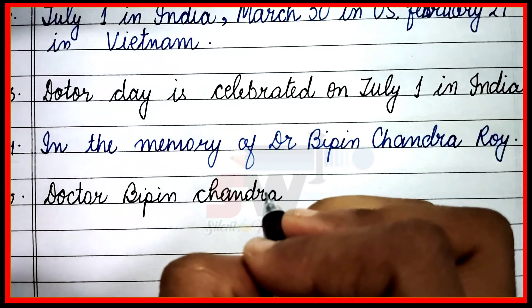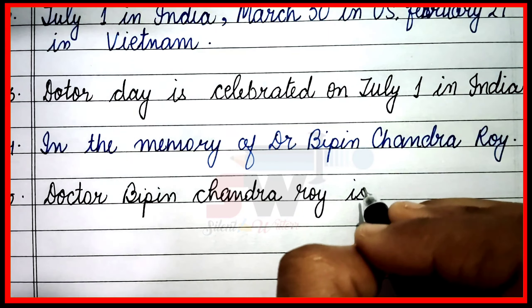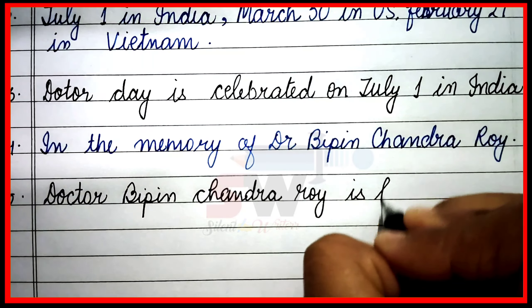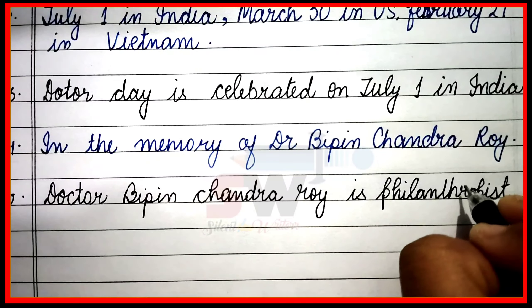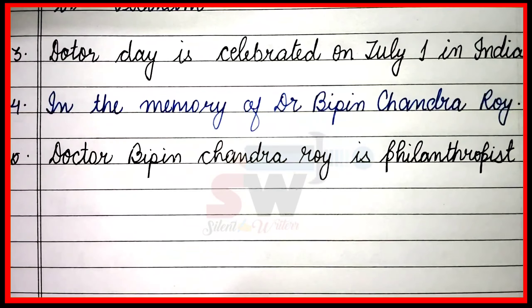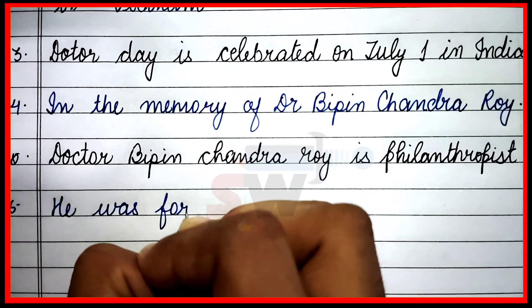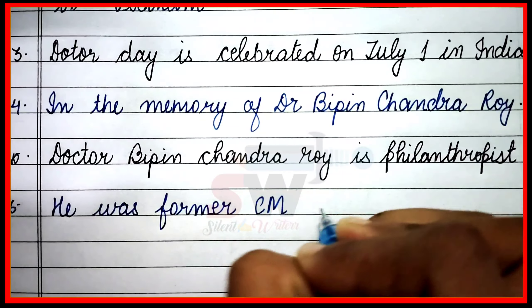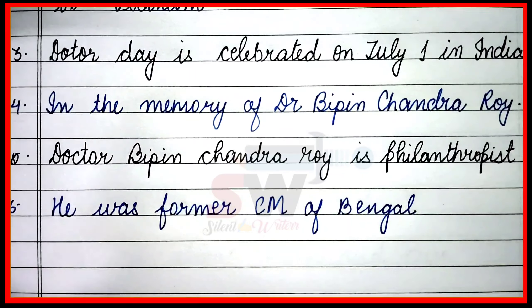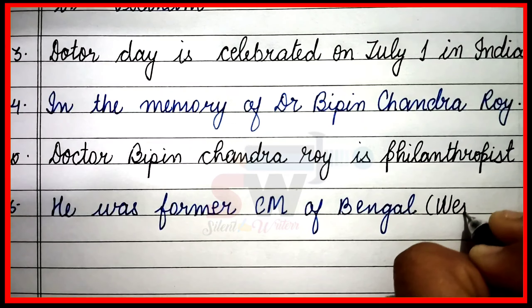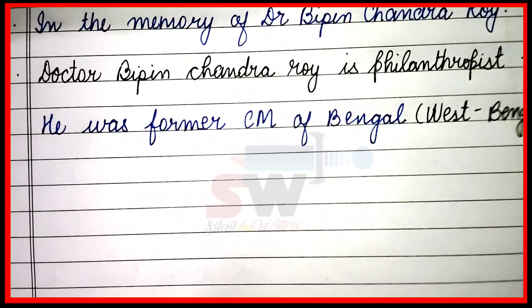Fifth line: Dr. Bipin Chandra Roy was a philanthropist. Sixth line: He was the former Chief Minister of West Bengal.